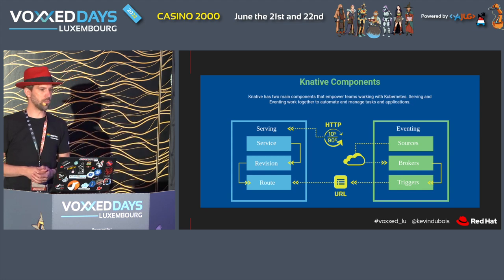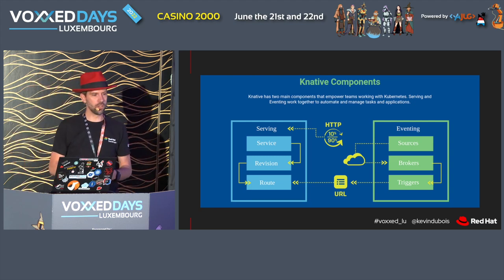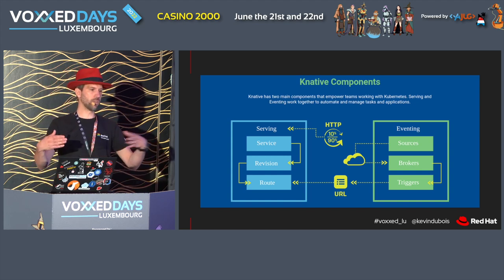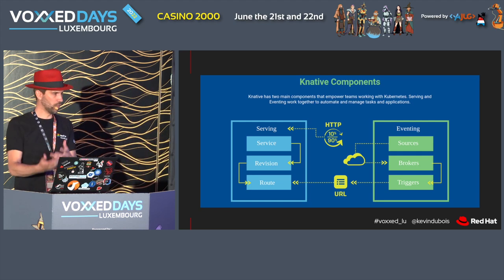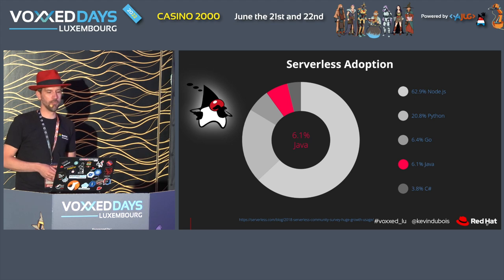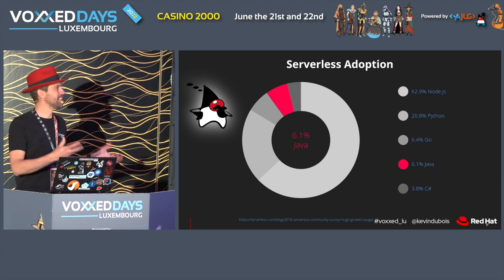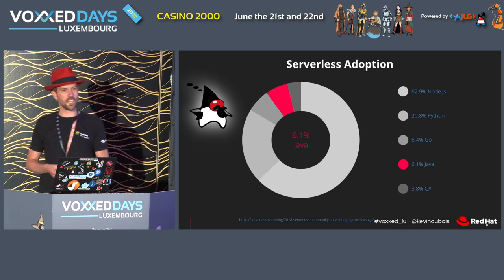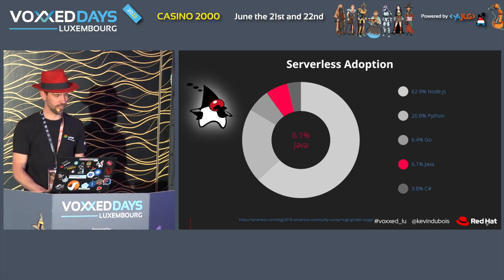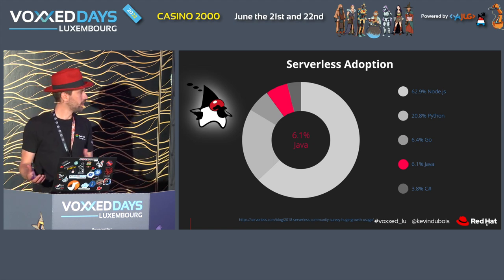CloudEvents is a standardized way CNCF has defined to send events. What's cool is you don't need any Kafka or AMQP definitions in your code — you just accept CloudEvents. The Knative framework handles the source configuration, so your application can be agnostic. If you switch from Kafka to another system, you just create a new source and don't need to change your application code. When talking about serverless though, Java isn't the most popular language, and our Java mascot Duke isn't too happy about that.